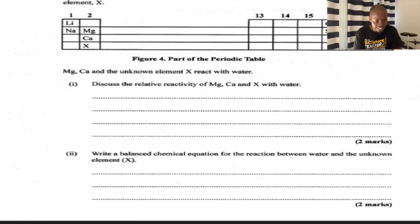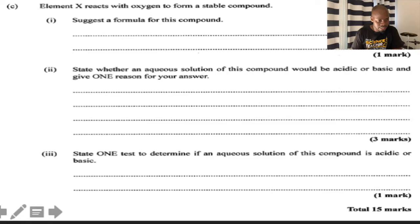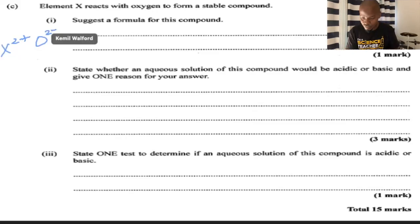Next: element X reacts with oxygen to form a stable compound. Suggest a formula for this compound. Element X is in group two, so when it reacts it forms X2+. Oxygen when it reacts gives us the oxide ion, O2-. This compound will be XO. That's it, one mark.